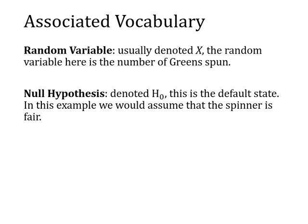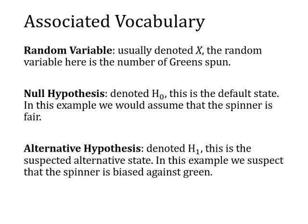Then we have the alternative hypothesis, denoted H₁. That notation is always used: H₀ for the null hypothesis, H₁ for the alternative hypothesis. The alternative hypothesis is the suspected alternative state. So back to our example — I suspect that the spinner is biased against green, so my alternative hypothesis would be that the probability of getting green is actually less than a quarter.